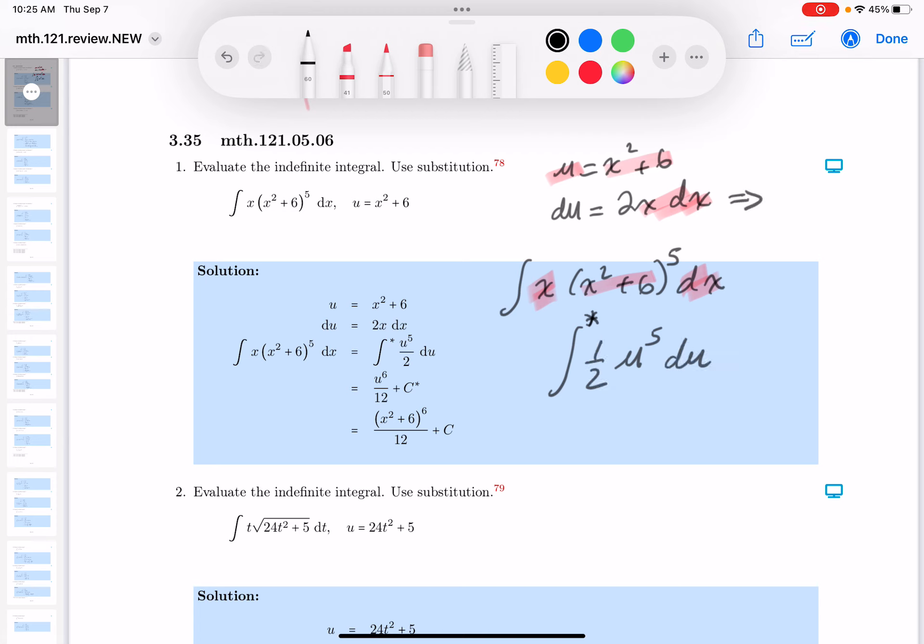Now why is that? If you divide both sides by two, you get one half du is x dx. Can I integrate this? I can, because the derivative is pretty easy. You get one half, it's a constant multiple.